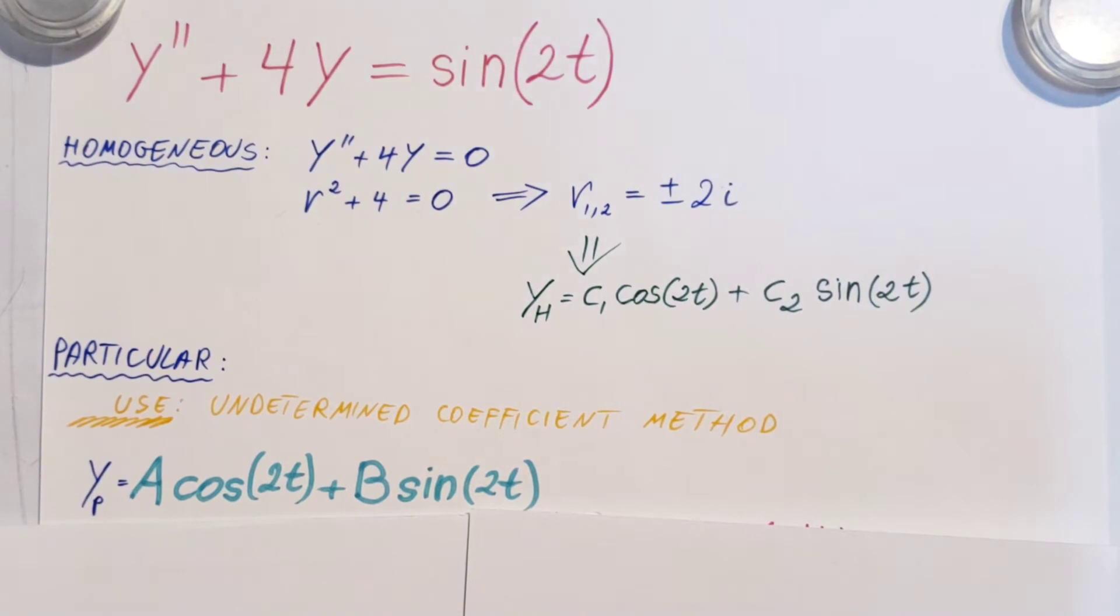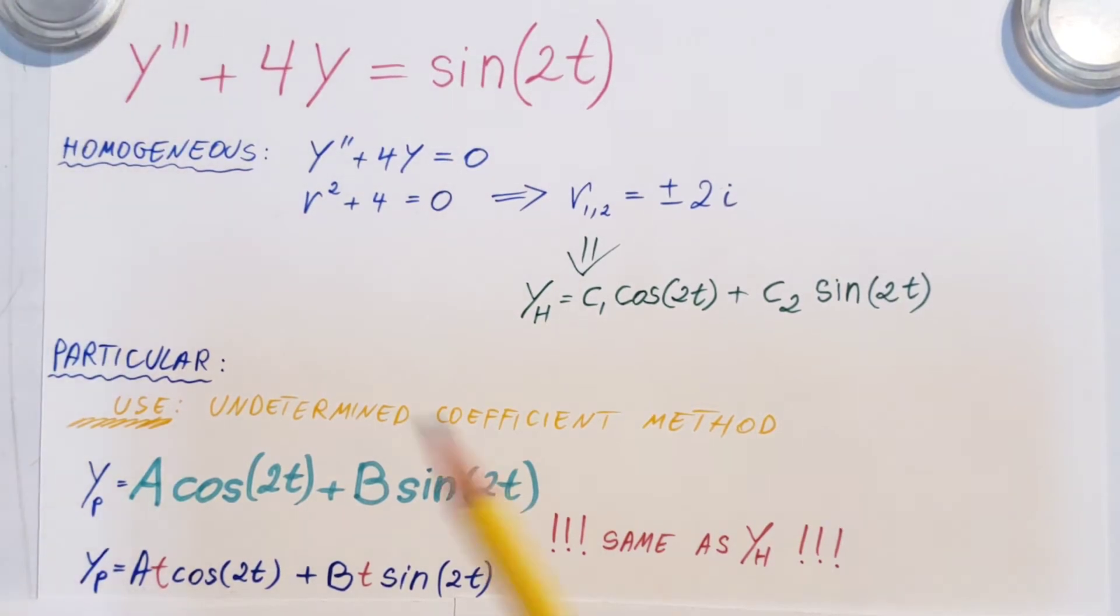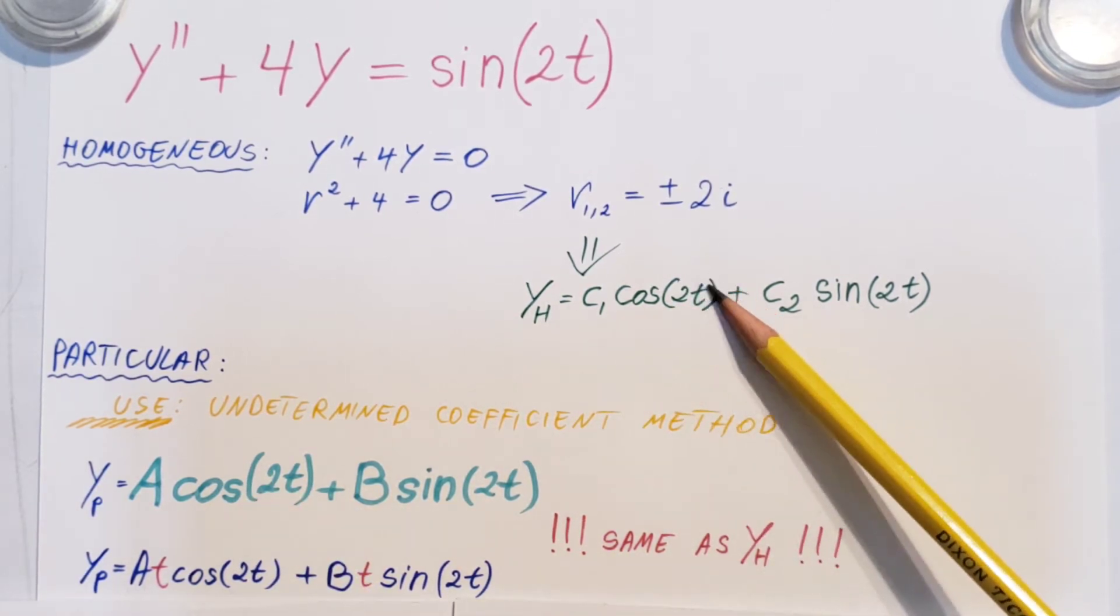Okay, hopefully I was able to explain it okay. Now, let's continue. At this point we need to realize that whatever we guessed right here is exactly the same thing as what we found for our homogeneous solution. This is not good. We cannot leave it this way. The rule says that whenever this looks like this, we have to add another t.